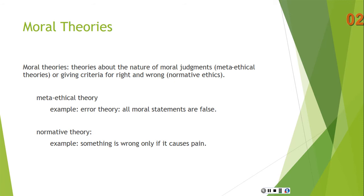A normative theory gives criteria for right and wrong. An example would be: something is wrong only if it causes pain. On this theory, you could do whatever you want so long as you don't inflict pain on anyone, including yourself perhaps. So this is a normative theory — it gives standards for right and wrong. The standard would be: don't cause pain; otherwise you're not doing anything wrong.